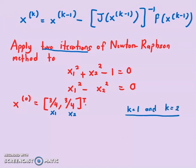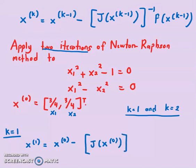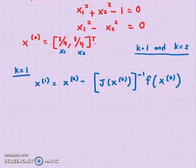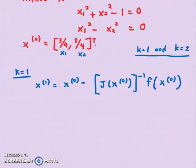We start by finding k = 1. When k equals 1, x1 equals x0 minus the inverse of the Jacobian at x0, multiplied by f(x0). This is the first equation for k = 1. So what I need to do is find the Jacobian inverse — but first, let's find the Jacobian.